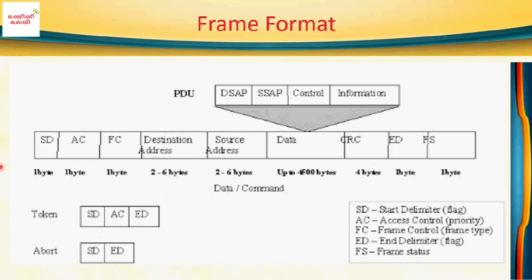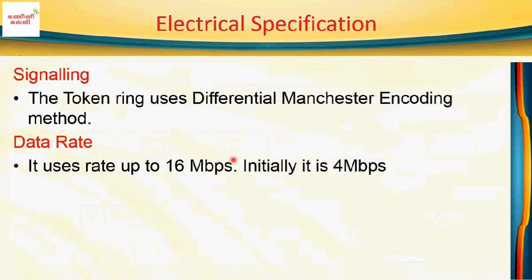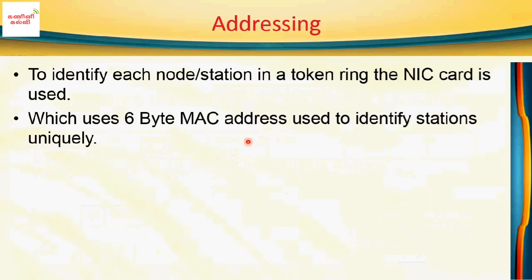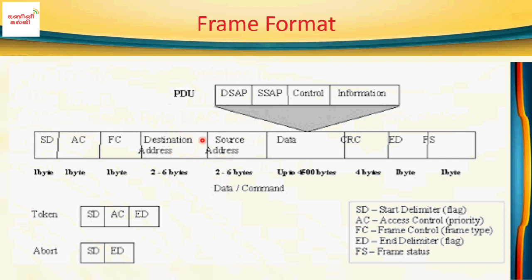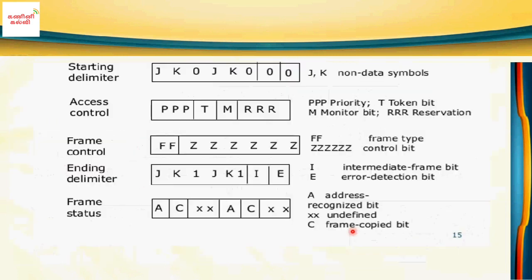The frame fields include SD (Start Delimiter) and ED (End Delimiter), which identify the beginning and end of the frame. There is also a frame status field, CRC for error detection, and data coming from the upper layer. The frame also contains source address and destination address fields, each 48 bits. AC is access control and FC is frame control.